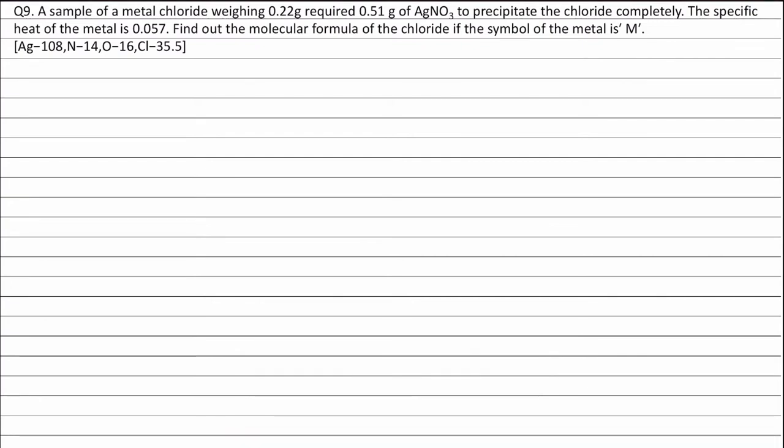Question 9. A sample of a metal chloride weighing 0.22 gram required 0.51 gram of AgNO3 to precipitate the chloride completely. The specific heat of the metal is 0.057. Find out the molecular formula of the chloride if the symbol of the metal is M.